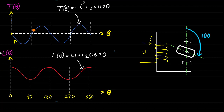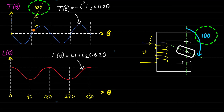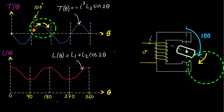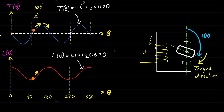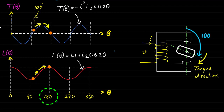If we locate the rotor at the 100-degree position, the direction of the torque will be positive and clockwise because the inductance increases in this direction. The rotor will eventually stop at the 180-degree position where the inductance is maximum. Let's conclude this lecture here and continue in the next lecture.